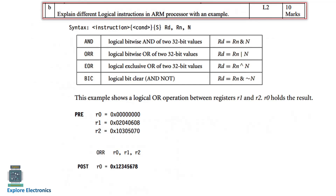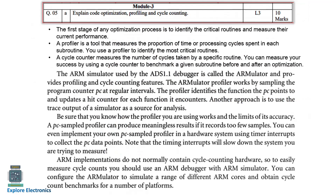The next question is about different logical instructions in ARM. The logical instructions are AND, ORR, EOR (exclusive OR), and BIC (bit clear). These should also be explained with examples.